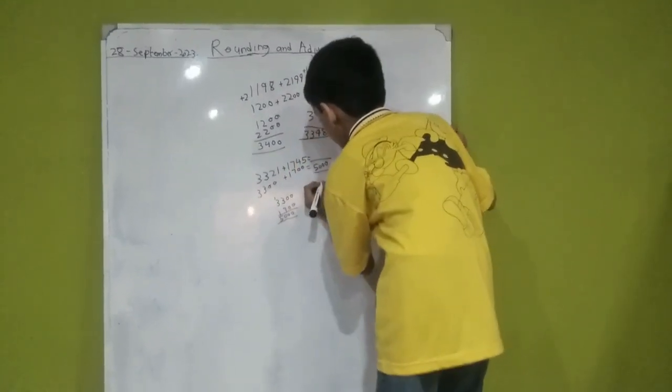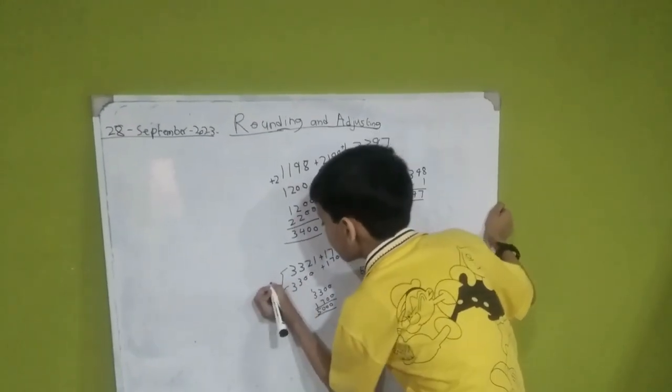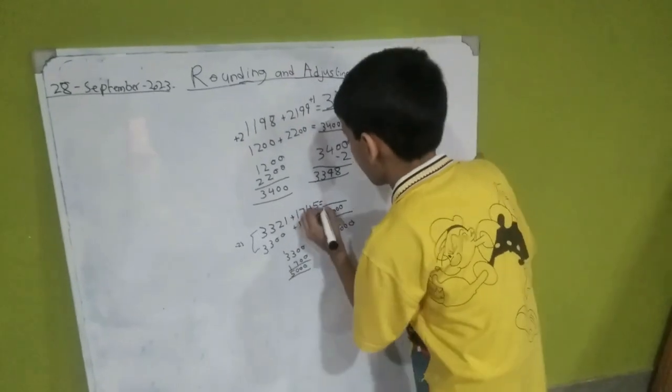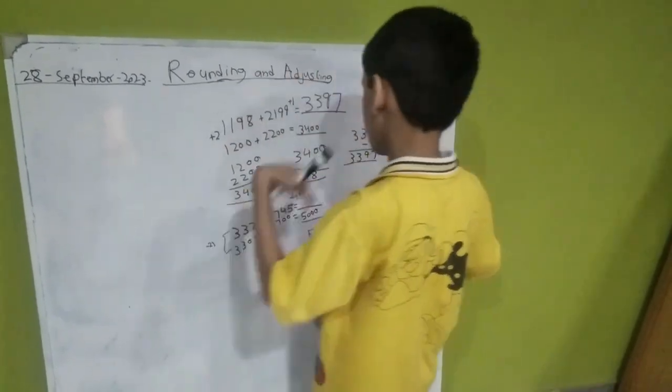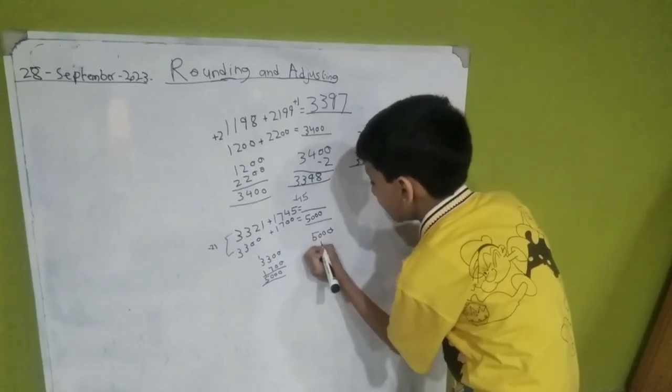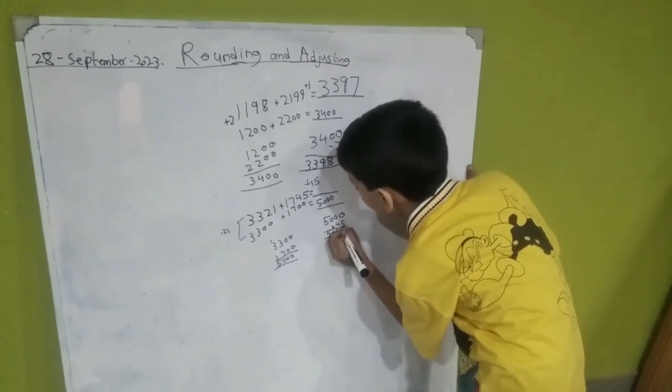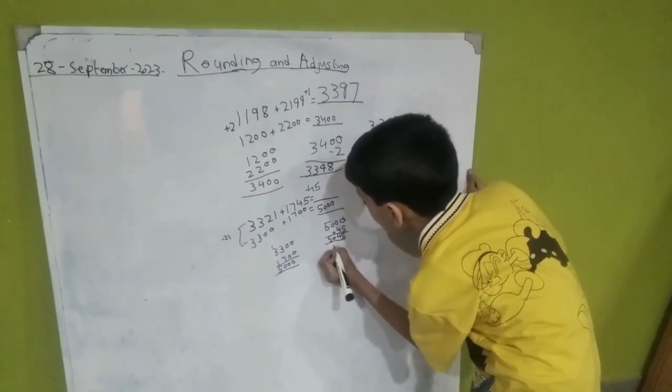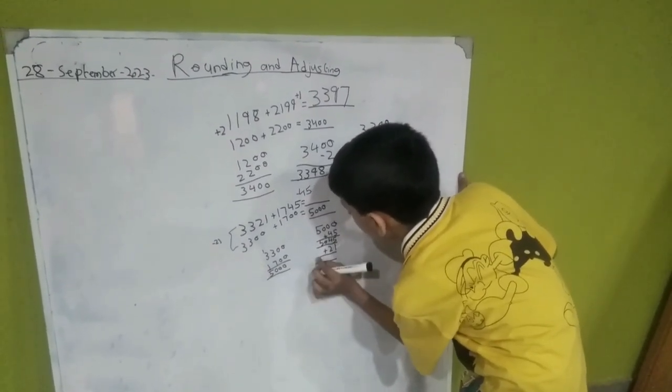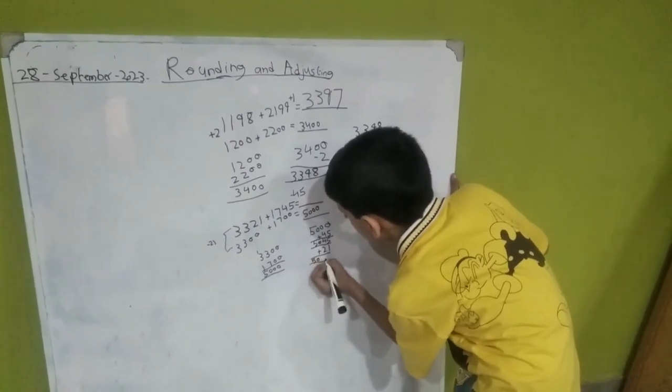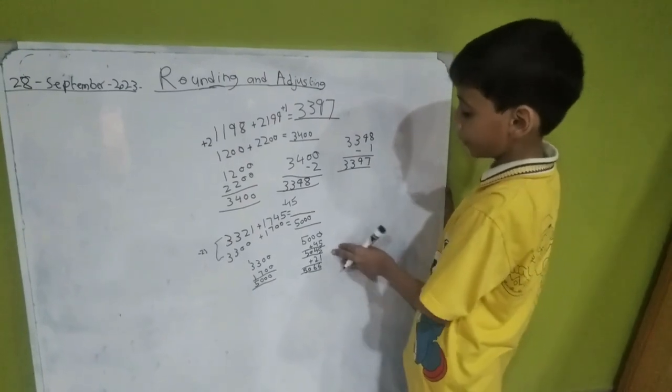Now 5,000 is not my actual answer. We have plus one here, minus 21 here, and minus 25 here. I have said that if there is a minus, we will plus it. 5,000 plus 21 will be 5,021. That is my actual answer.